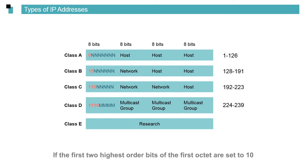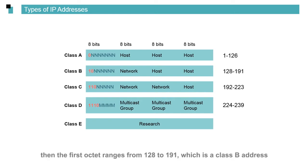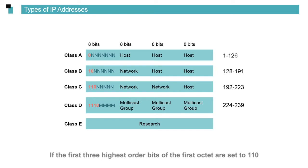If the first two highest order bits of the first octet are set to 10 and the remaining bits are not configured, the first octet ranges from 128 to 191, which is a class B address. If the first three highest order bits of the first octet are set to 110, then the first octet ranges from 192 to 223, which is a class C address.